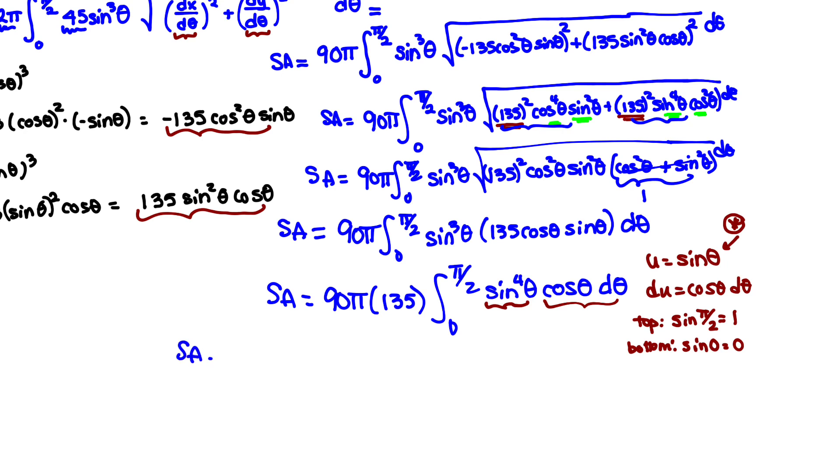So after a quick u-substitution, the surface area is 90π times 135, and I'll leave it just like that in case we're going to cancel some things. Times the integral from 0 to 1, that's my new u limits, of u⁴ du. So close! Let's take the antiderivative. We've got 90π times 135 times 1/5 u⁵ from 0 to 1.